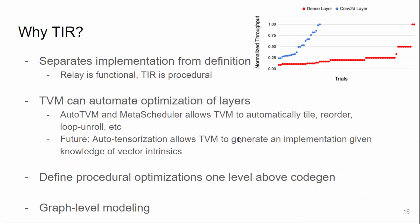Now I want to zero in on TIR. The simplest thing would be to take your Relay representation and map each layer into a C implementation. But TIR gives TVM quite a bit of power. First, it allows TVM to split apart the problems of model parsing and model optimization. More importantly, TIR allows TVM to define procedural optimizations over the model that are agnostic to the output language — for example, the same common subexpression elimination pass can be used on TIR regardless of whether it's running on a CPU, GPU, or an accelerator.